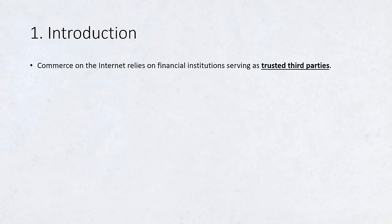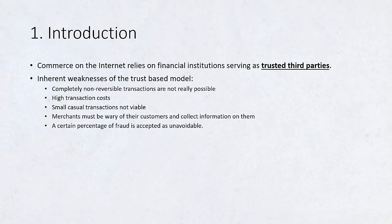Introduction. Commerce on the Internet has come to rely almost exclusively on financial institutions serving as trusted third parties to process electronic payments. While the system works well enough for most transactions, it still suffers from the inherent weaknesses of the trust-based model. Completely non-reversible transactions are not really possible, since financial institutions cannot avoid mediating disputes.